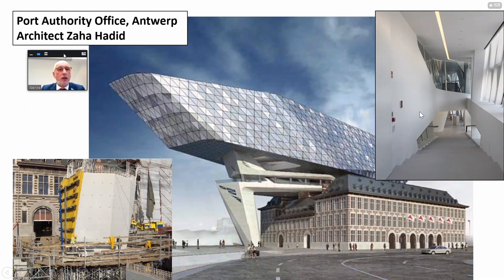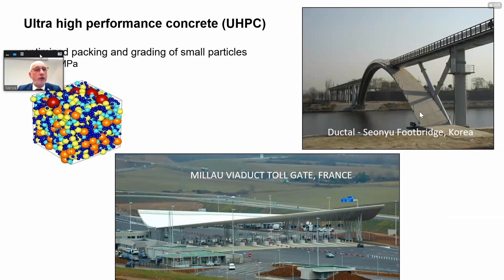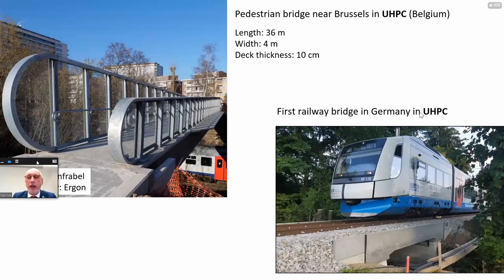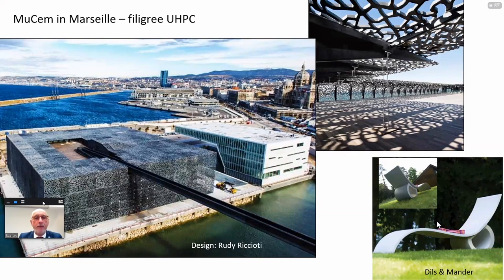Ultra-high-performance concrete, obtained by optimized packing and grading of small particles, reaches a very high compressive strength over 150 megapascal. Some early applications include a footbridge and pedestrian bridge in Korea, and the Millau Viaduct Toll Gate in France. More recent applications include a pedestrian bridge near Brussels in UHPC, the first railway bridge in Germany in UHPC, the well-known museum in Marseille with its filigree UHPC structure, and of course in UHPC we can also make more relaxing objects.